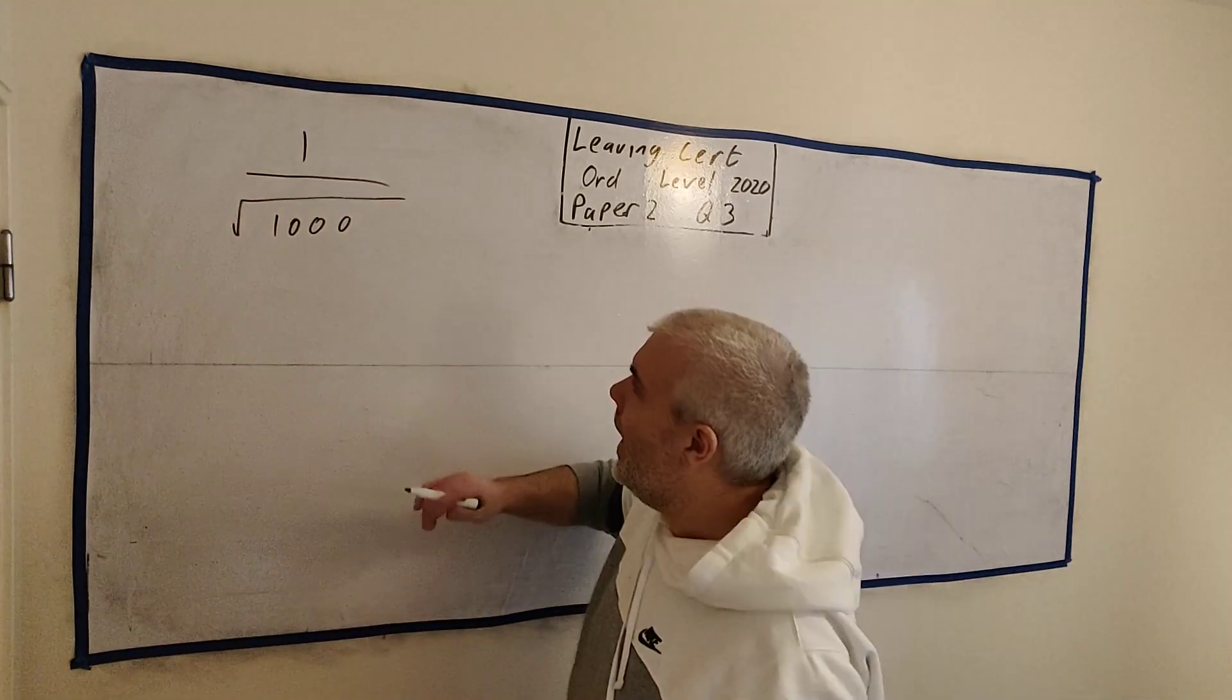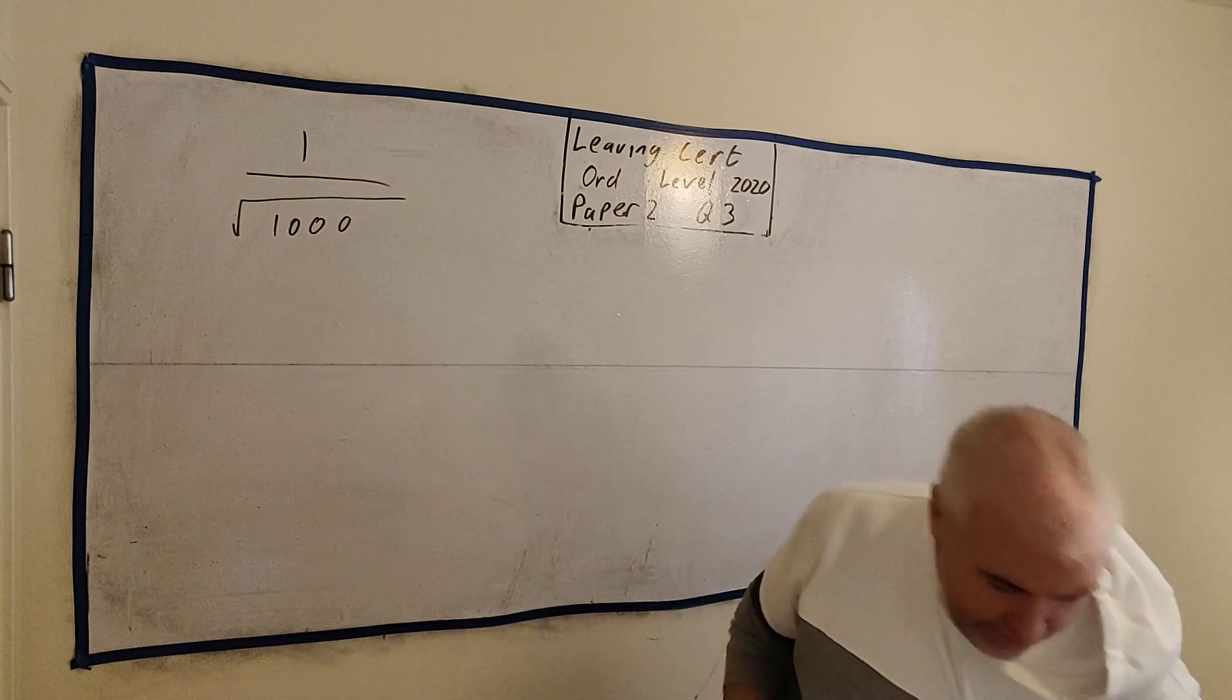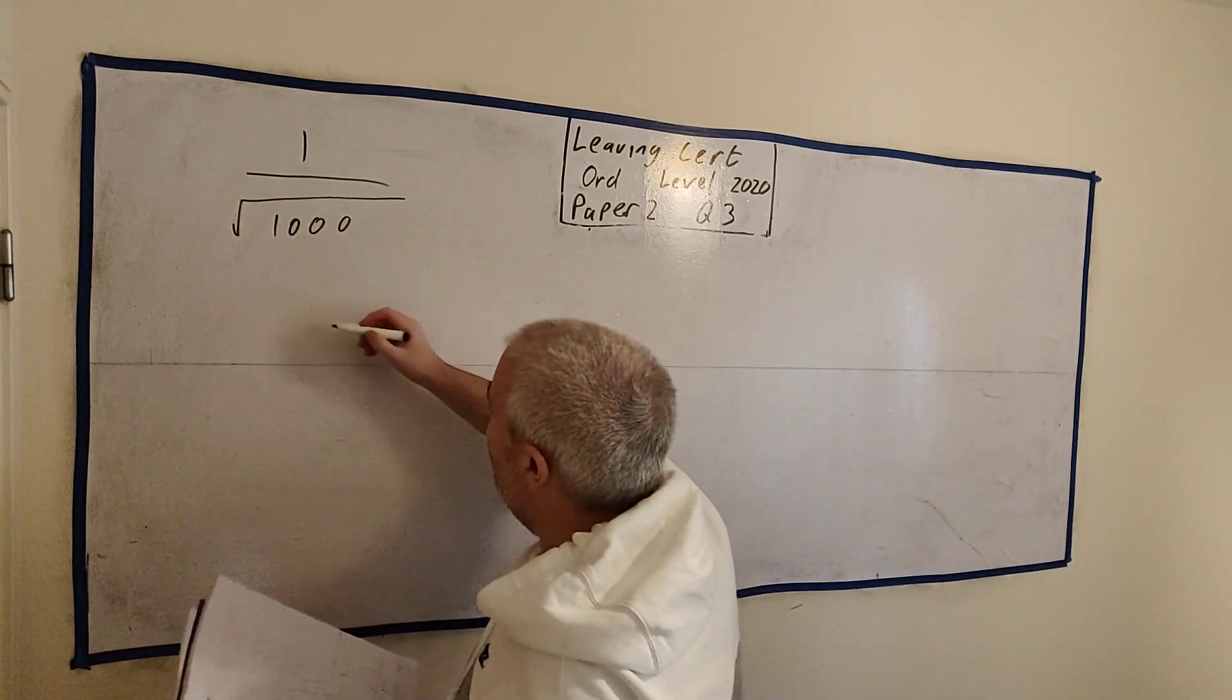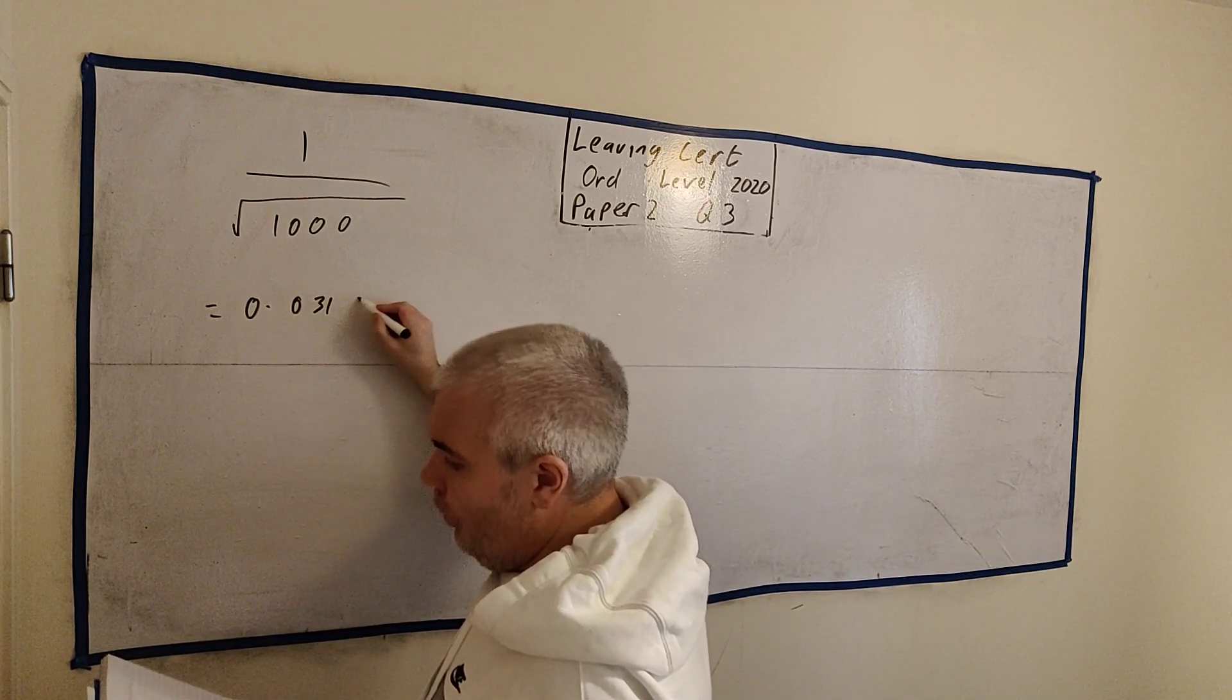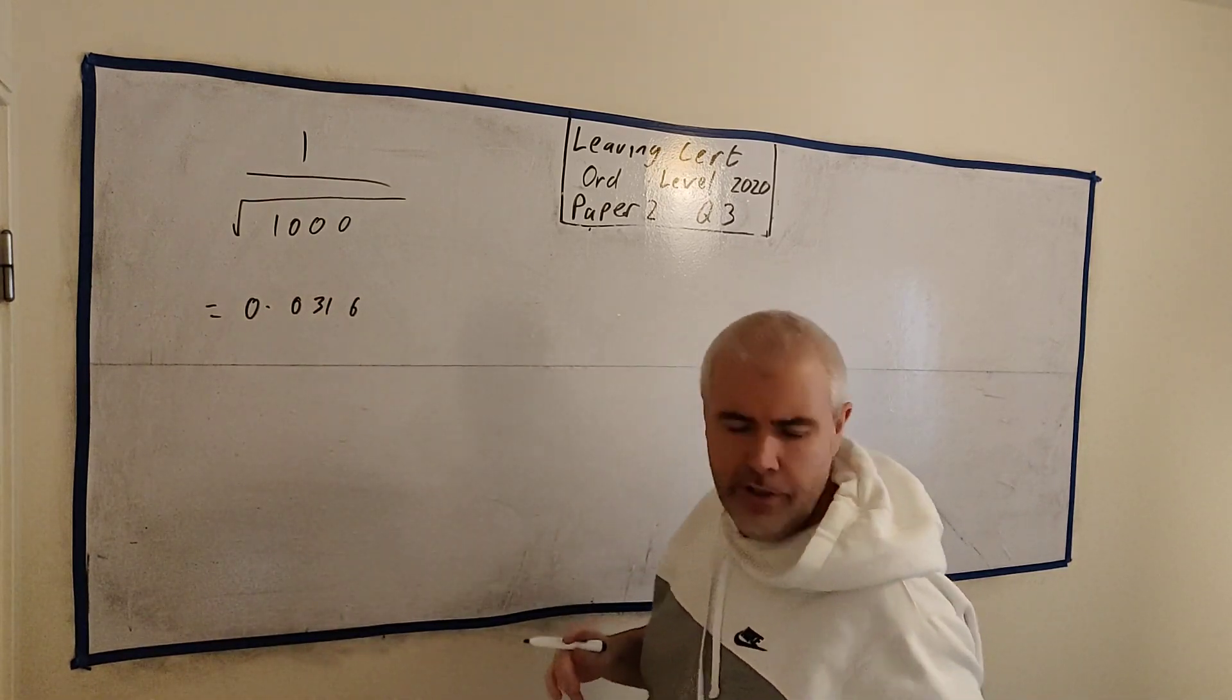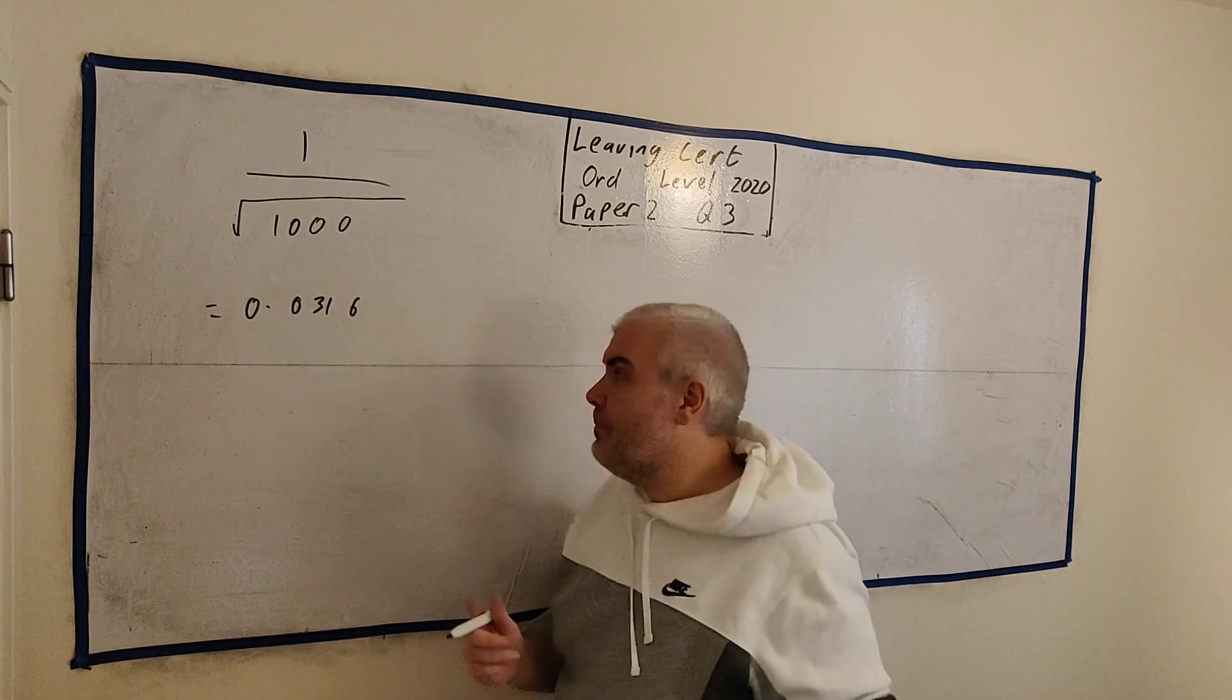In this question, they have a thousand people in a survey, and the first part says, just give the margin of error for a survey. Now, it's a useful one to remember for real life. If you ever read in a newspaper or online about some survey being done, always keep an eye out for the number that they tell you how many people were in the survey, because that'll give you the margin of error. And that's just one divided by the square root of that number.